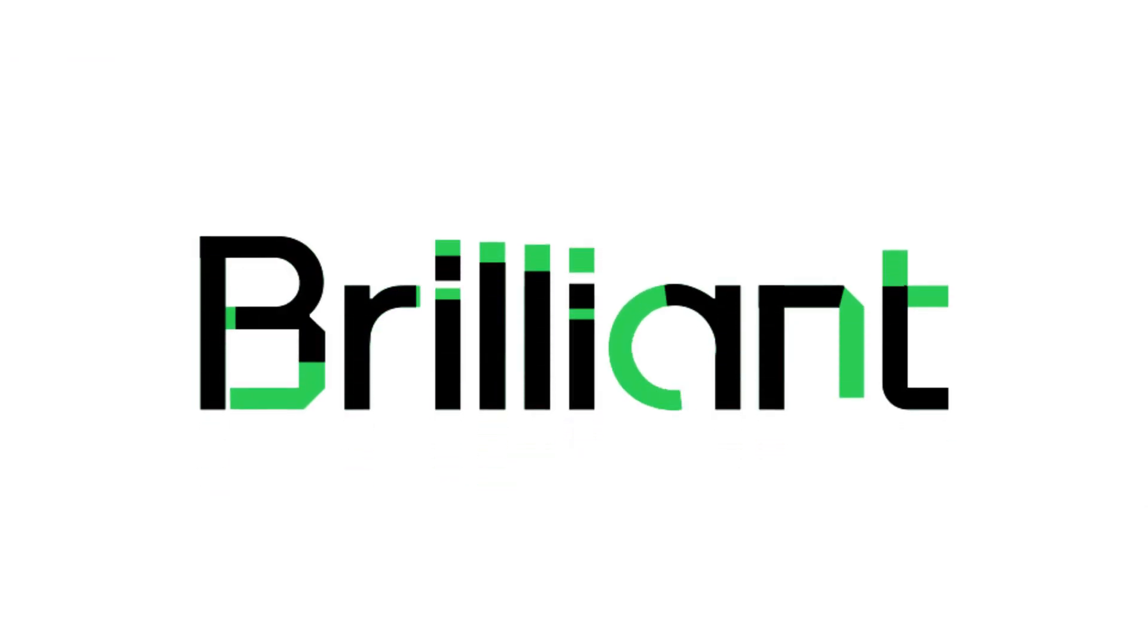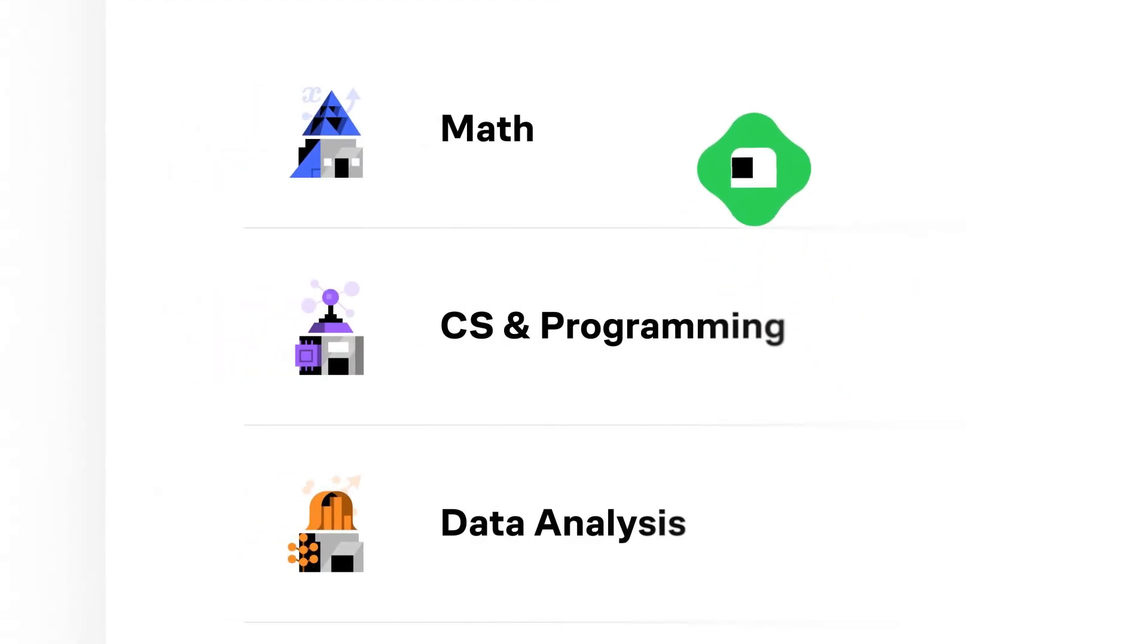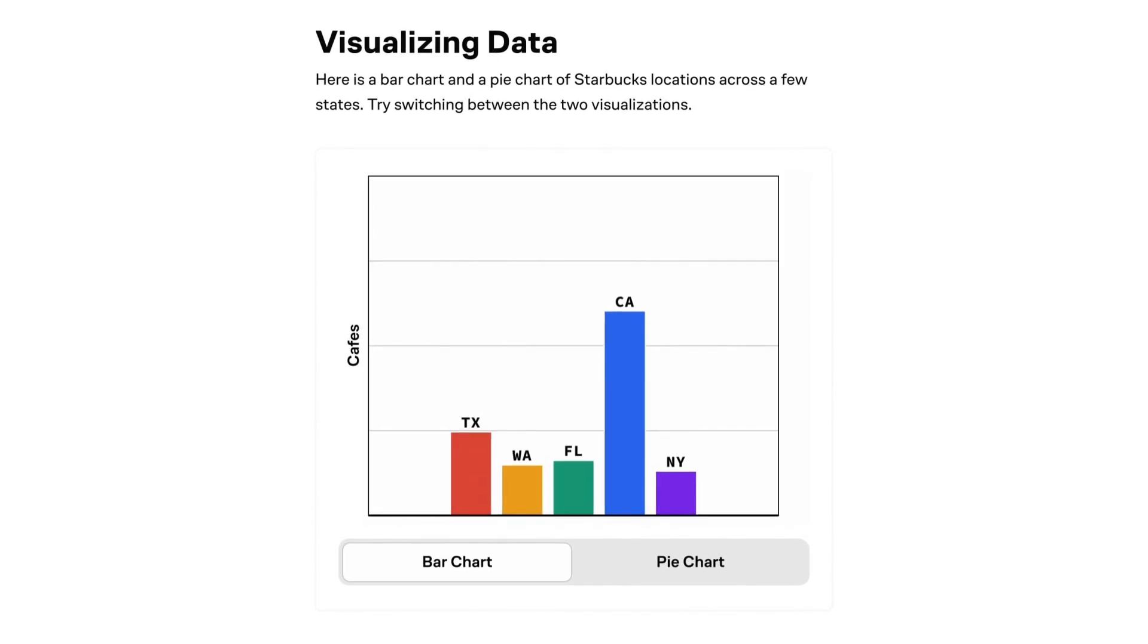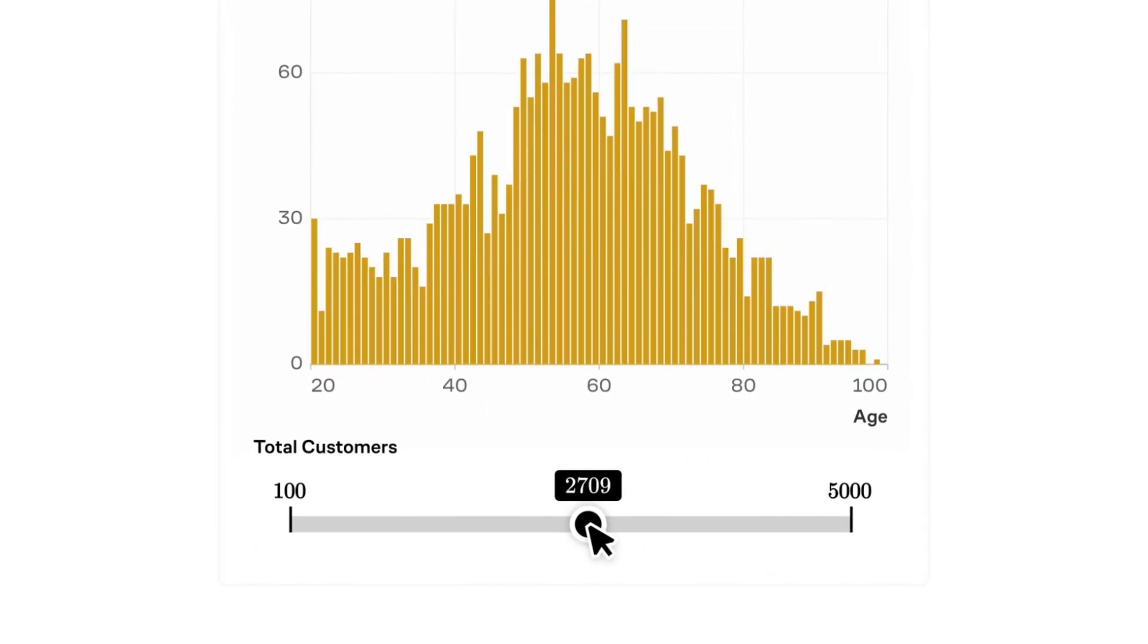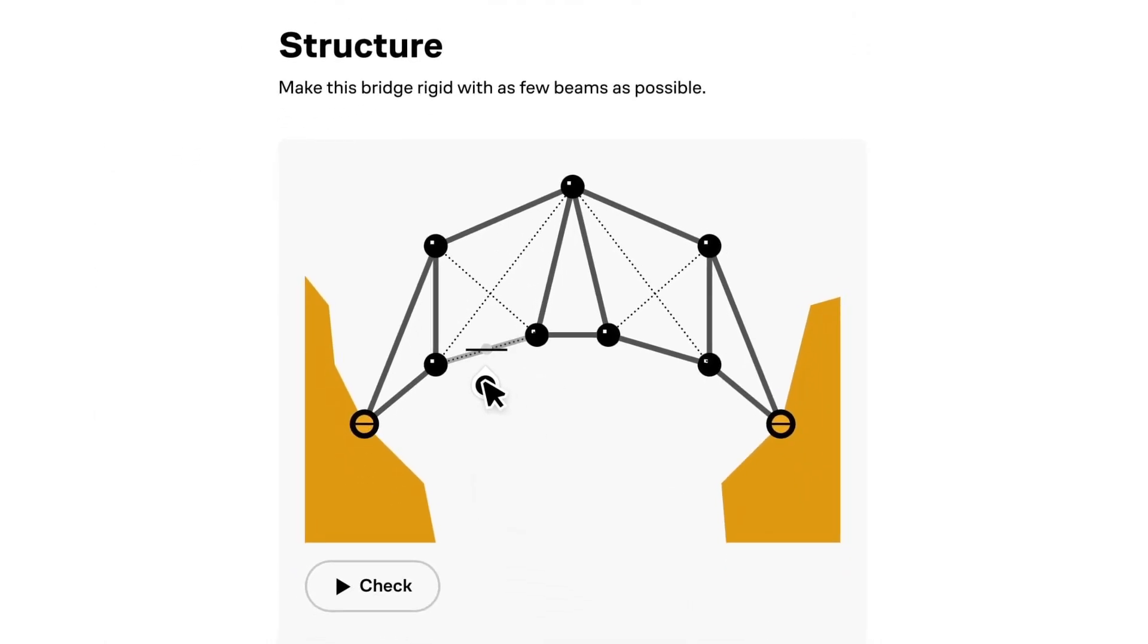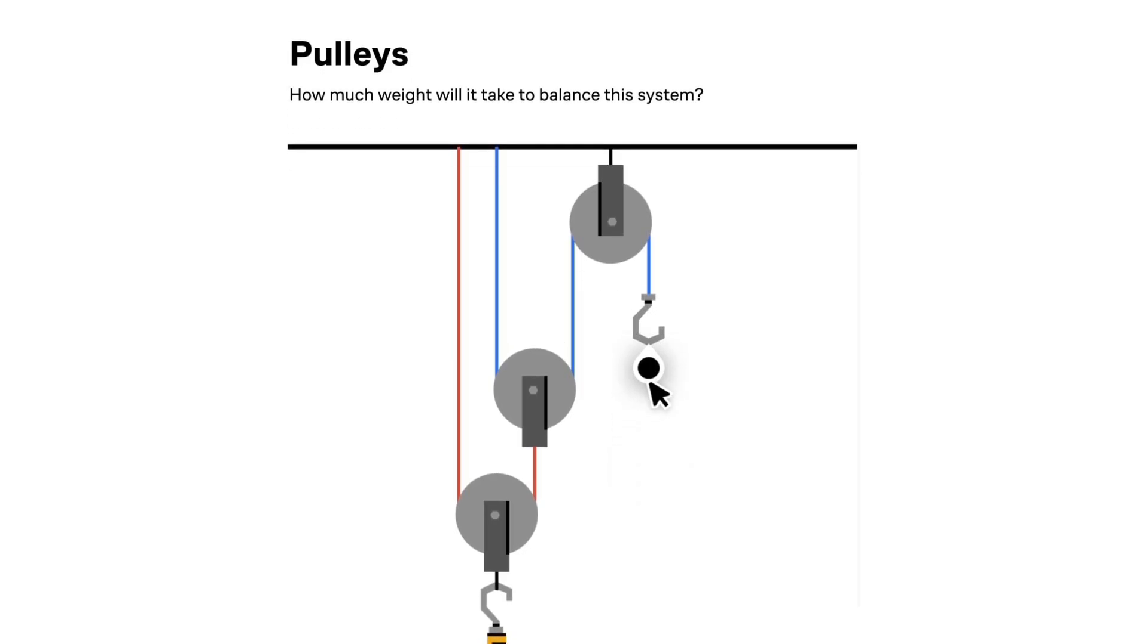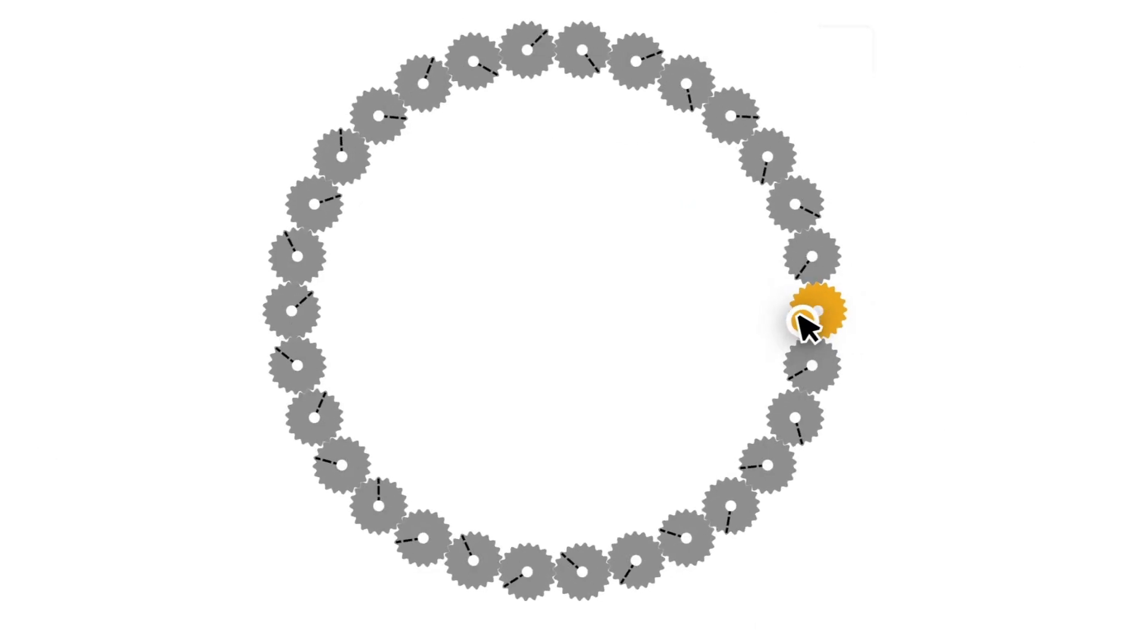That's where the sponsor of today's video Brilliant.org comes into play. Brilliant is a hands-on learning platform that empowers you to learn by doing, with thousands of interactive lessons in logic, AI, data science, and quantum mechanics. One standout offering from Brilliant is their science course, where each lesson is filled with real problem solving that lets you play with concepts, a method proven to be 6x more effective than watching lecture videos.